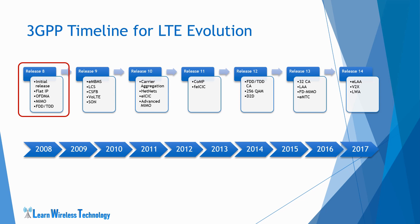Release 8 was the first release of LTE, defined in the year 2008. It has a flat IP architecture which reduces a lot of signaling across the network. OFDM is used as the access technology and MIMO is used to enhance the data rates. LTE supports both FDD and TDD duplex modes.